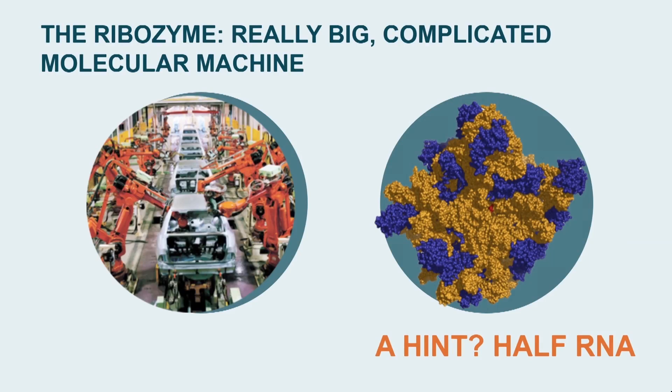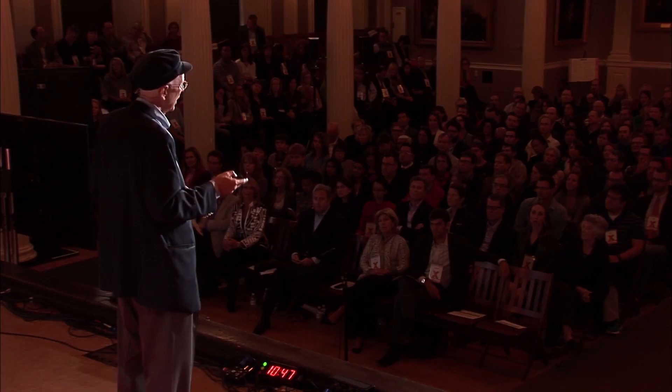Some of the chemistry is so complicated it's almost difficult to believe. To give you an idea: on the left is an automobile assembly line; on the right is the molecular equivalent — a particular molecule called the ribozyme. I mention it because it's very big, and because it makes everything — it makes all the molecules that make all the molecules that make the cell. And third, it has in it a component called RNA, which is like DNA. All of you know DNA, and we'll come back to it.